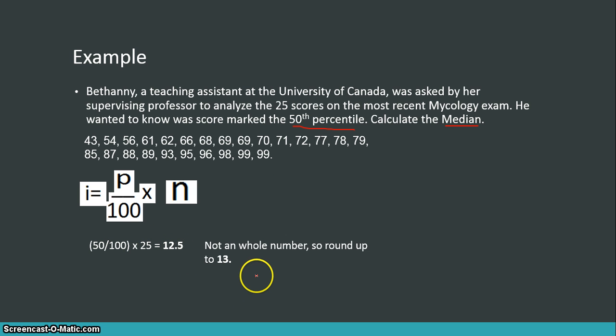And remember, if you don't get a whole clean number, you have to round up. So you round up to 13, and that's what our I equals. Our I equals 13. So that means we have to find the 13th number in our data set, arranged from least to greatest, is going to mark the 50th percentile. So let's try to find that.